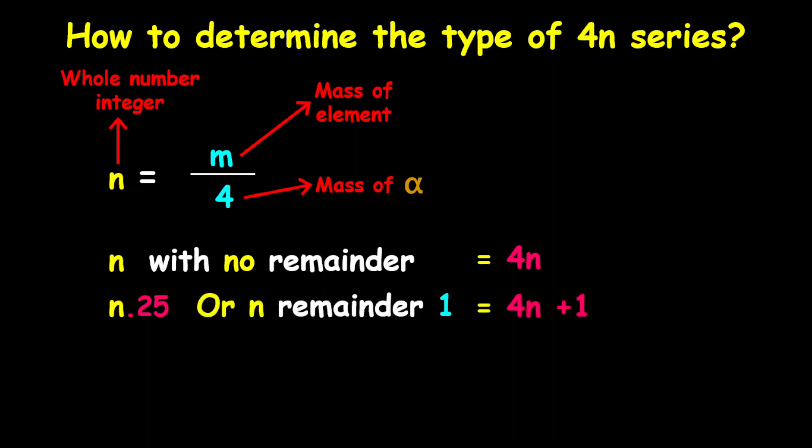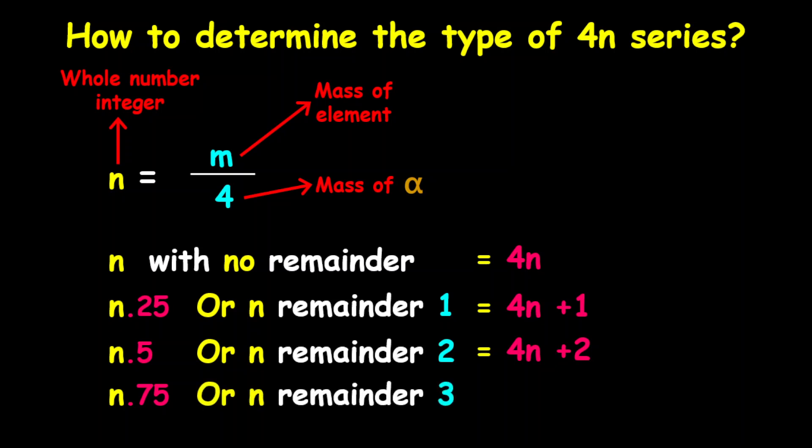When you divide m by 4 and you get n point 5, which is the same thing as n and two remainder, then this is a 4n plus 2 series. When you divide m by 4 and you get n point 75, which is the same thing as n and three remainder, then this is a 4n plus 3 series.